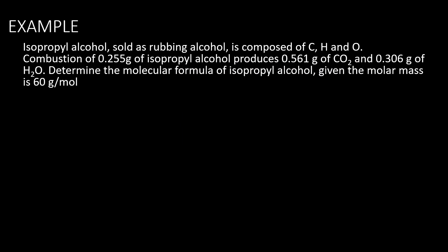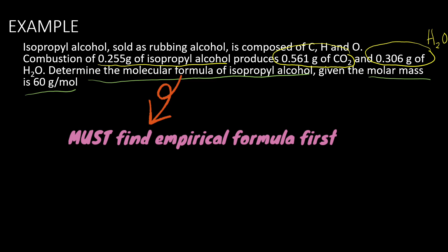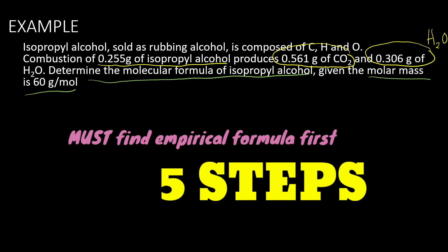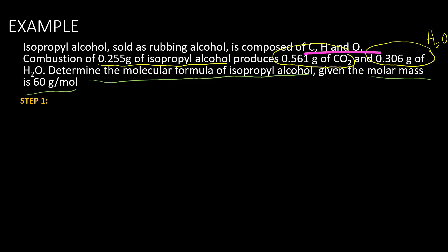I will use this example to go through the five steps. Isopropyl alcohol is composed of carbon, hydrogen, and oxygen. 0.255 grams of isopropyl alcohol is combusted, producing 0.561 grams of carbon dioxide and 0.306 grams of water. We are asked to determine the molecular formula given the molar mass is 60 grams per mole. To find the molecular formula, we must first find the empirical formula using the five steps. The elements present in isopropyl alcohol are carbon, hydrogen, and oxygen.